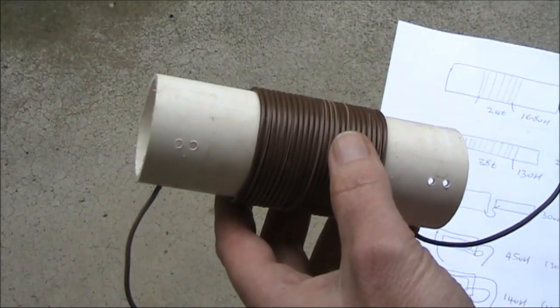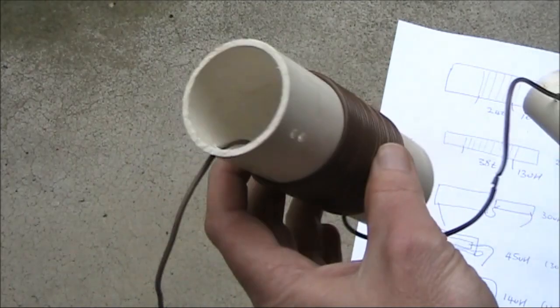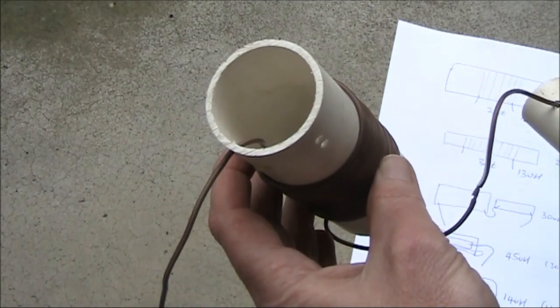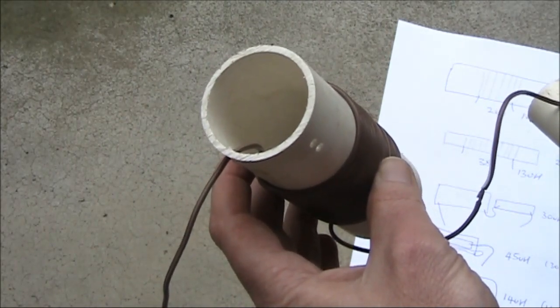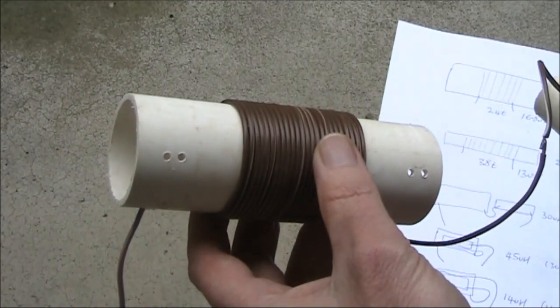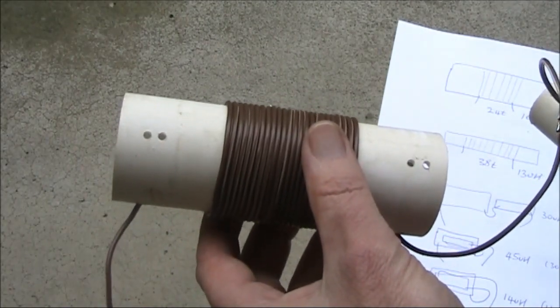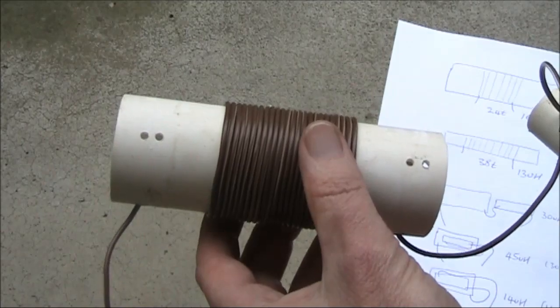The first coil is 24 turns of speaker wire on a former conductor about 40 millimeters in diameter. It's a bit of plastic pipe. Its total inductance is just under 17 microhenry.